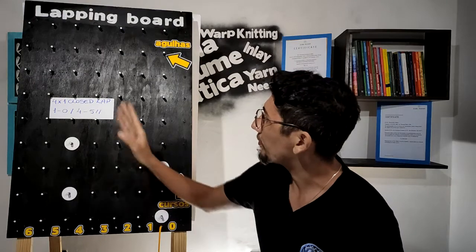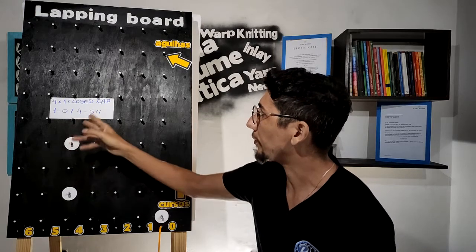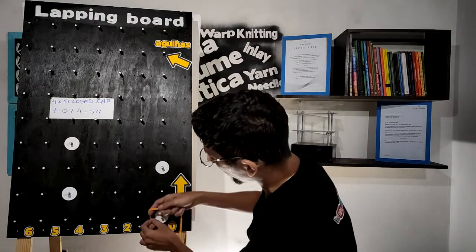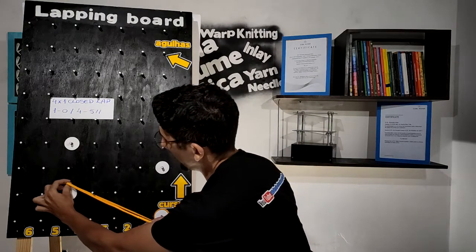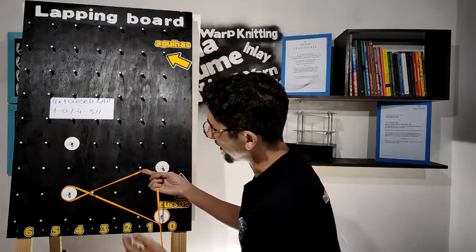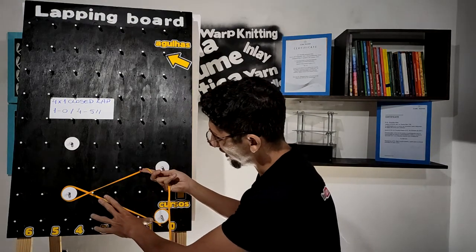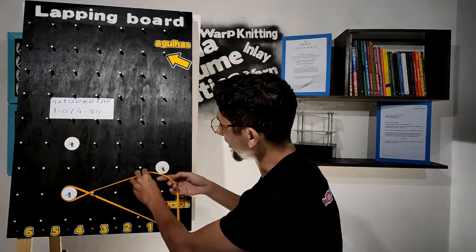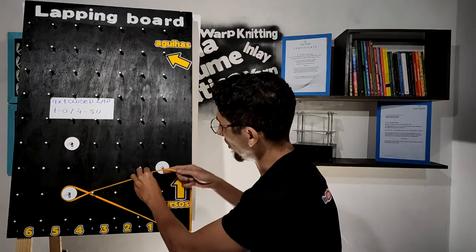Let's represent the four-by-one closed lap, which has chain notation one-zero-four-five. We need to go first one-zero, after that four-five. Here the repeat is completed — pay attention that we have a long underlap. We can make the same repeat again on the next needles.